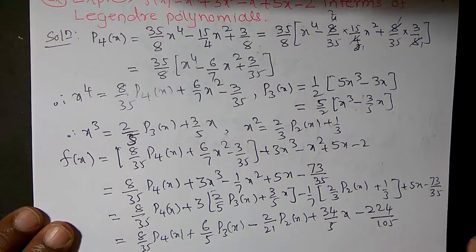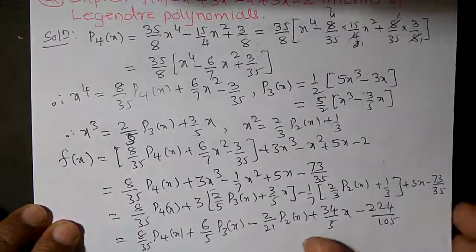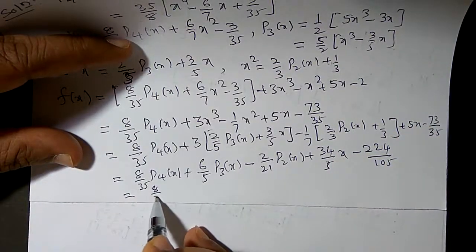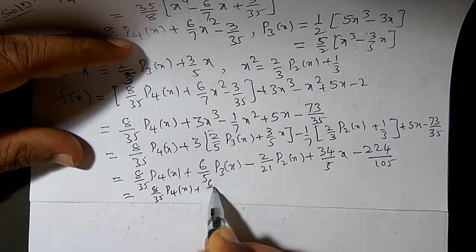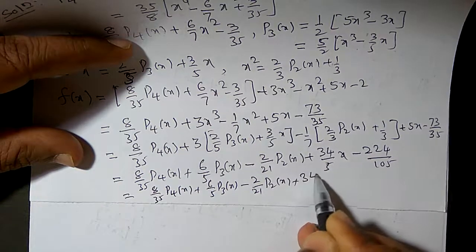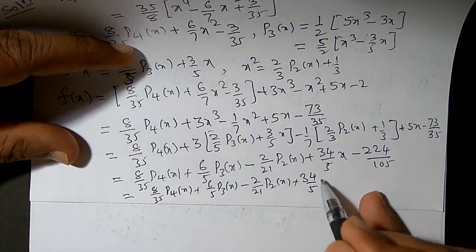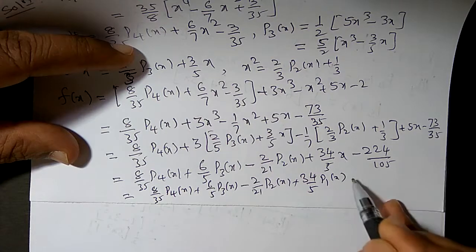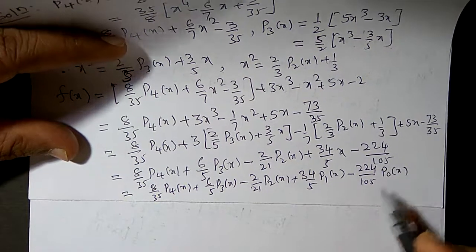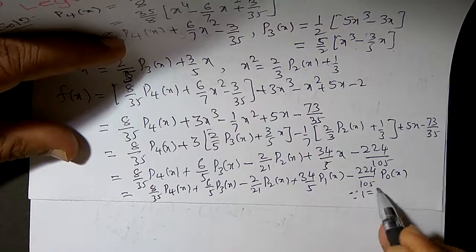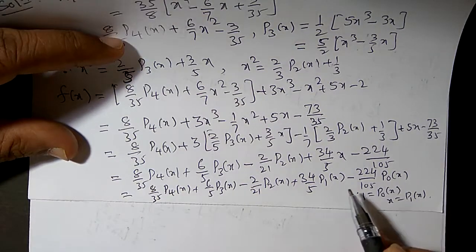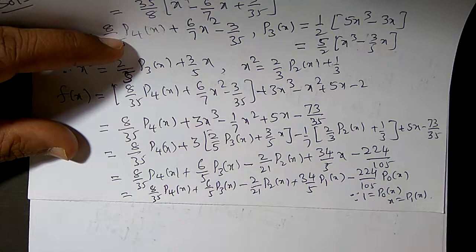Now substituting x = P1(x) and 1 = P0(x), the final result is f(x) = (8/35)P4(x) + (6/5)P3(x) - (2/21)P2(x) + (34/5)P1(x) - (224/105)P0(x). Since 1 = P0(x) and x = P1(x), this is the required expression of f(x) in terms of Legendre polynomials.